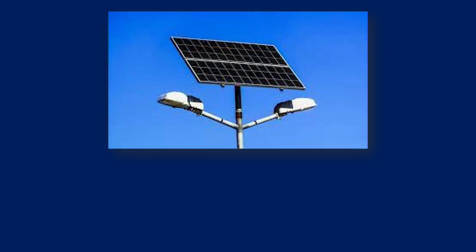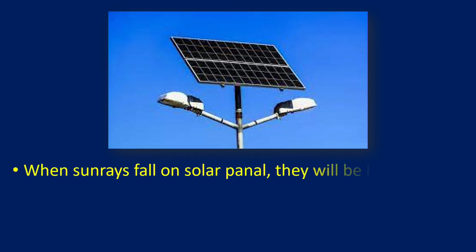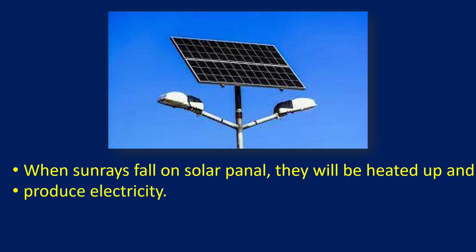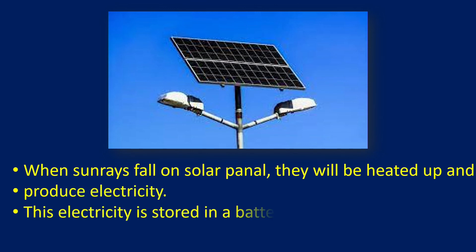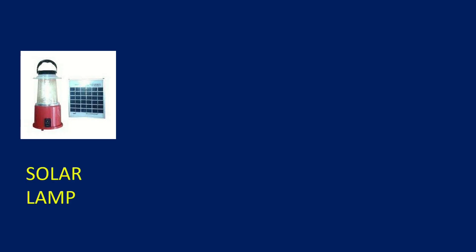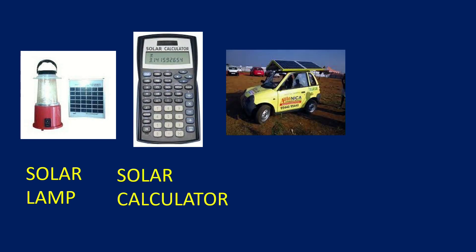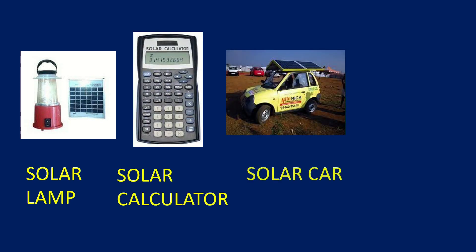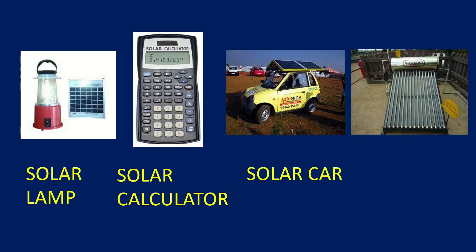It is a solar panel. When sun rays fall on a solar panel, they will be heated up and produce electricity. This electricity is stored in a battery and used to glow the lights during night time. These devices include: a solar lamp, a solar calculator, a solar car with panels mounted on it, and a solar water heater. Nowadays, in all hostels, we are having solar water heaters.